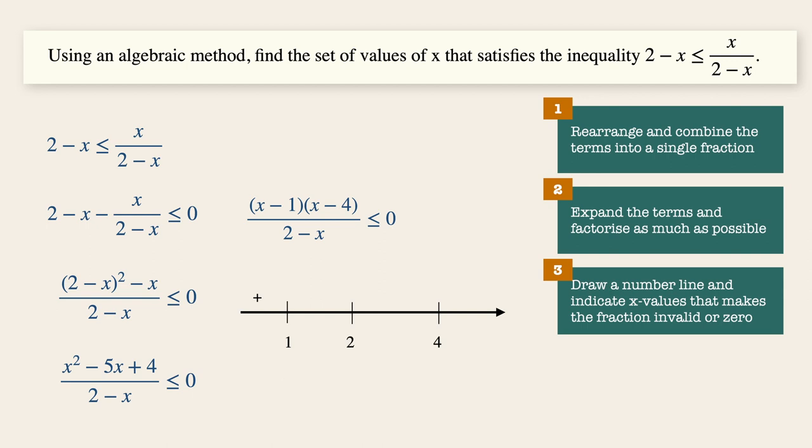Similarly, let's substitute any convenient x values that are within these intervals. If x is 1.5, the result is a negative value. If x equals to three, the expression is positive. And if x equals to five, the expression is going to be a negative one.